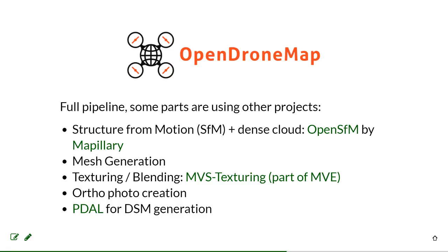OpenDroneMap provides a full pipeline. It started a couple of years ago because there was no easy-to-use open source pipeline going all the way from structure from motion to orthophotos and textured mesh. It incorporates other open source projects such as OpenSfM, developed by Mapillary — a company that does open source street view — and it also uses other projects, including PDAL, the Point Data Abstraction Library.